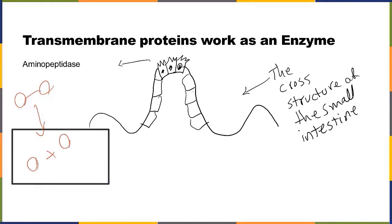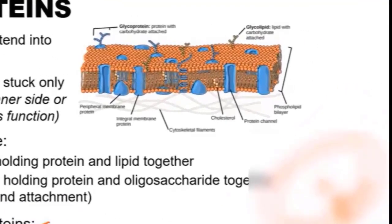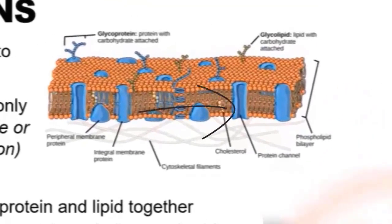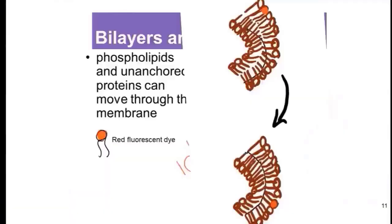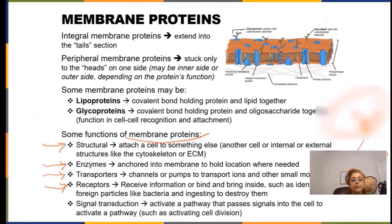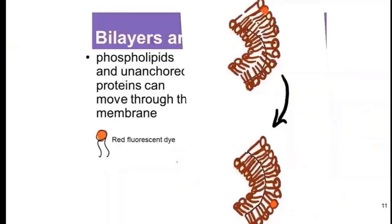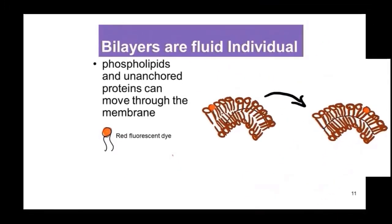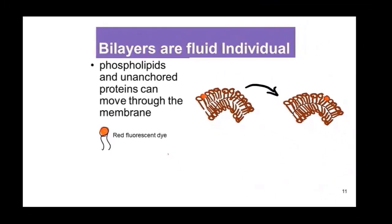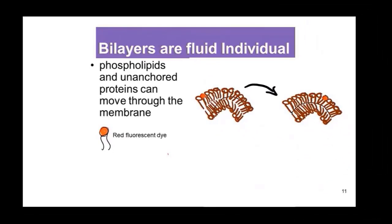There are also some transmembrane proteins that work as transporters — we will get to those later. There are membrane proteins that work as receptors and also for signal transduction. As you can see, the bilayers are fluid. For example, if you use a red fluorescent dye and label one of the phospholipids, you cannot locate it at the same place later — that's why we say plasma membranes are dynamic, fluid membranes.